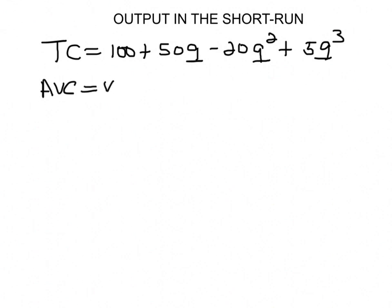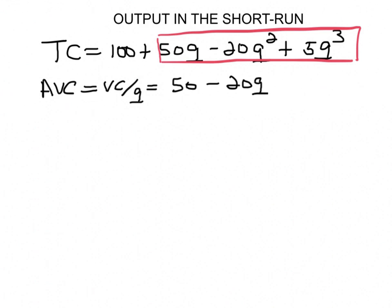Remember that the average variable cost is the variable cost divided by output, so we are basically going to take the variable cost part of that equation, which is this one, and we're going to divide that by q. And we're going to end up with 50 minus 20q plus 5q squared.